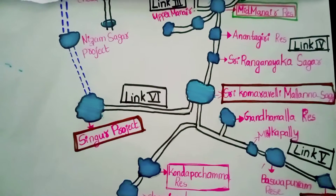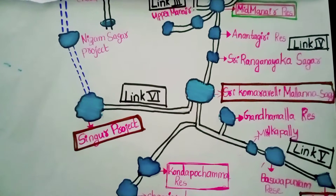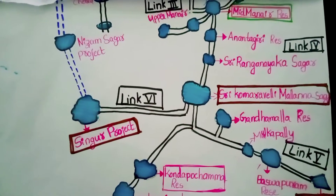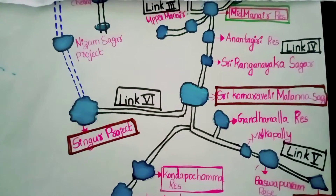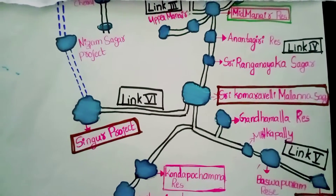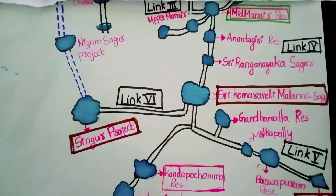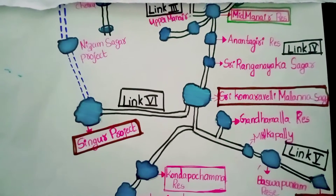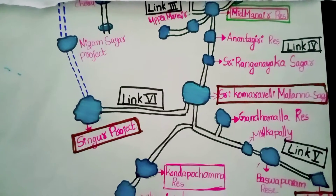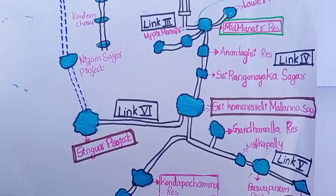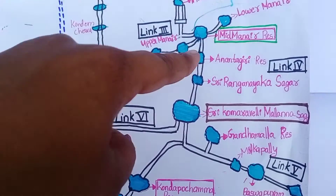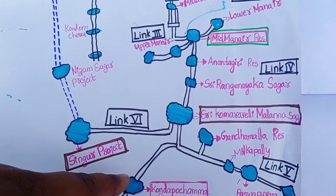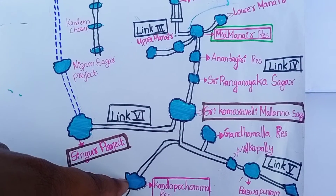Previous videos covered links 1, 2, 3 of the Kaleshwaram project. This video explains links 4, 5, 6, and 7. Coming to Link 4, it goes from Midmaner Reservoir to Kondopochamma Reservoir.